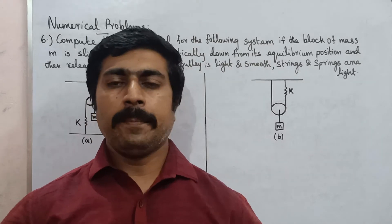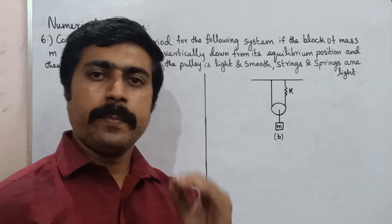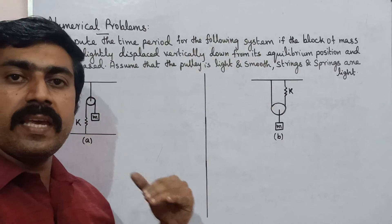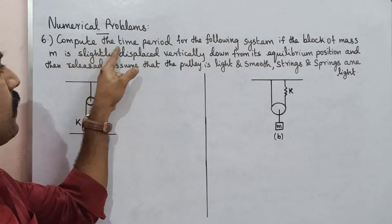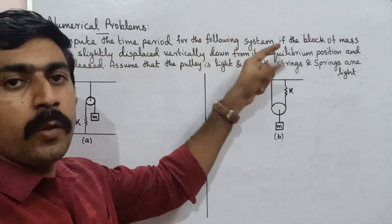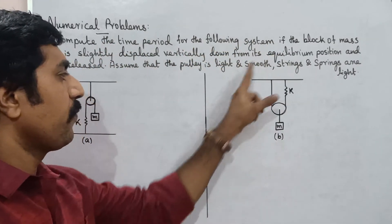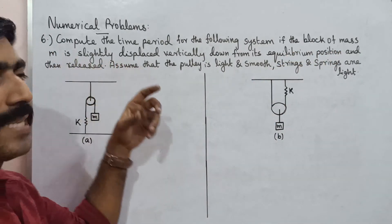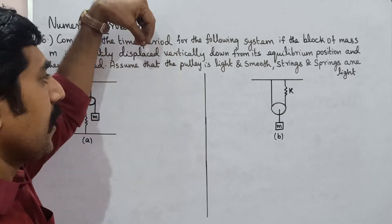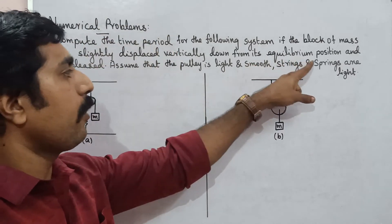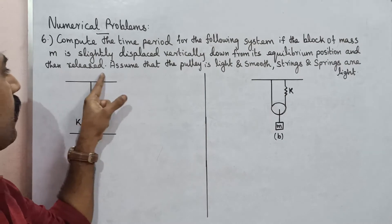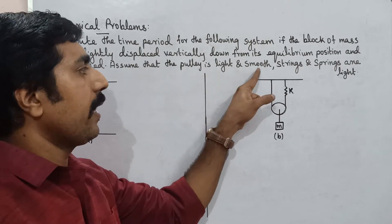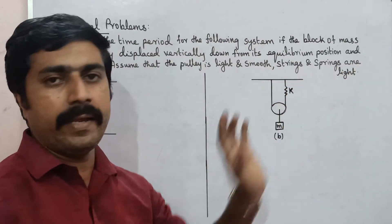Hi students, if you look at problem number six in your bookbag: compute the time period for the following system. If the block of mass m is slightly displaced vertically down from its equilibrium position and then released. Assume that the pulley is light and smooth, and strings and springs are light.